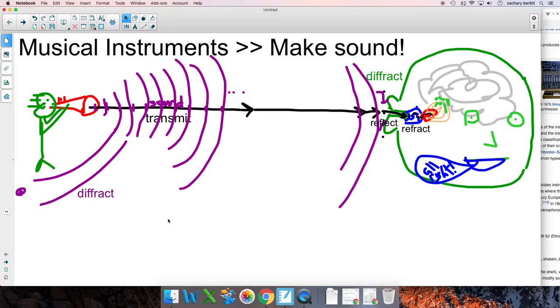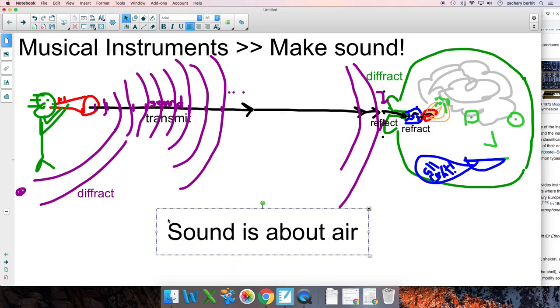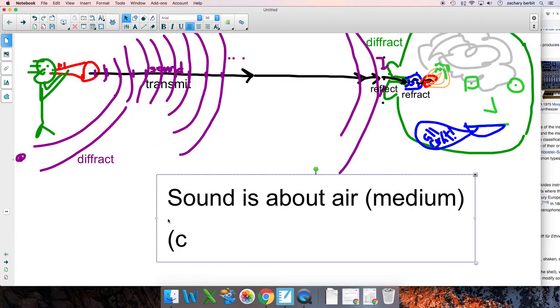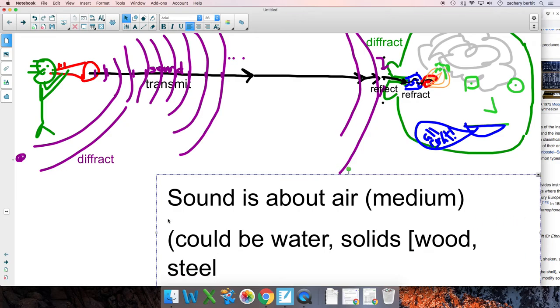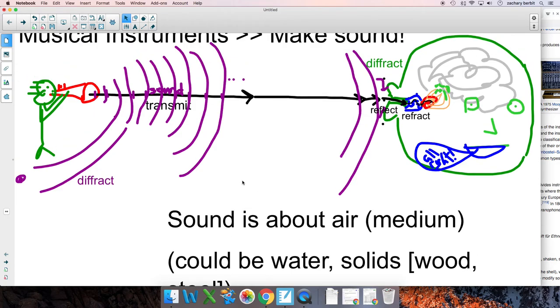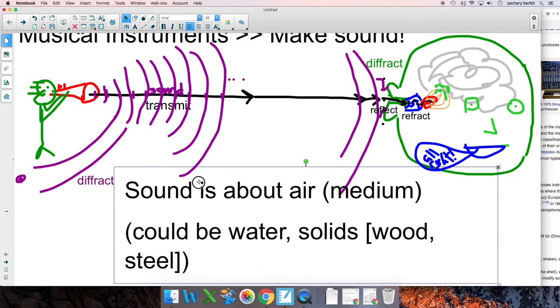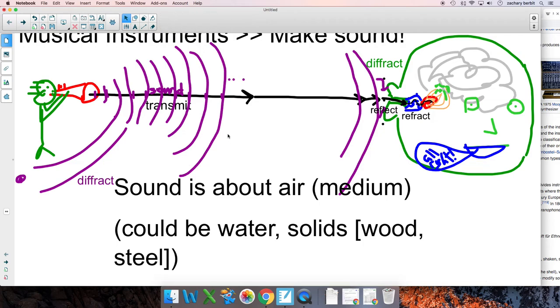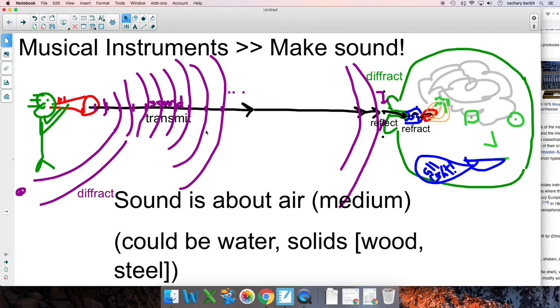Sound fundamentally—sound is about air, or really any sort of medium. Typically we do air. Of course, the medium could be water. It could be solids like wood, steel. That part's not important. What's important is most of the time we're listening to music, the sound is traveling through air. When we think about musical instruments, we are not so much focused on it makes the air vibrate. Of course it does. All the instruments make the air vibrate.